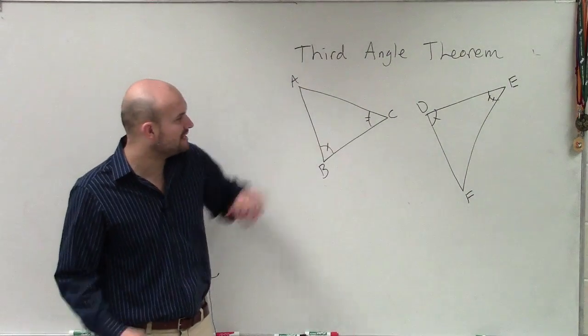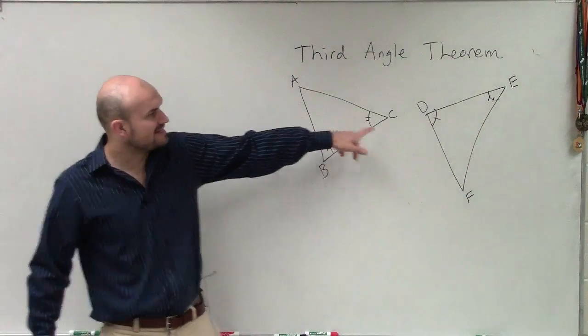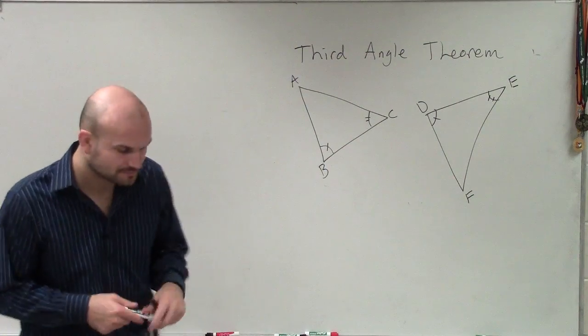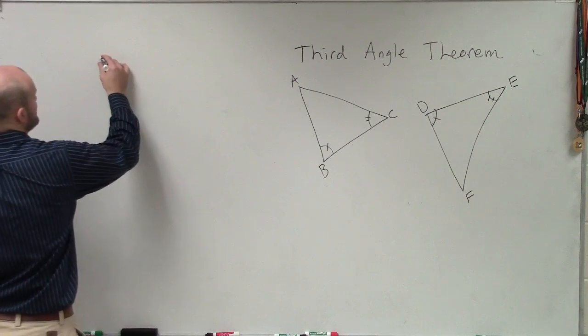What we have right now is angle B is congruent to angle D, and angle C is congruent to angle E. Those are corresponding parts in the two triangles, so we can write that down.